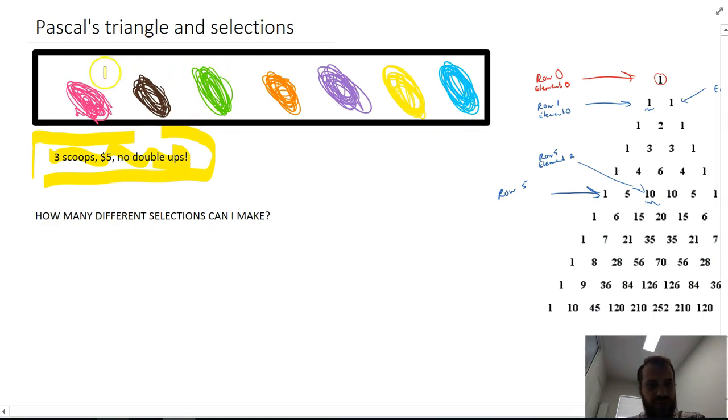Now the question is how many different selections can I make? So I could choose these first three here or I could choose the first two followed by the orange one or I could choose the last two and the green one. There are a lot of different selections I could make but how many different selections? And actually Pascal's triangle helps us with this. So when we're talking about these selections we use this notation.